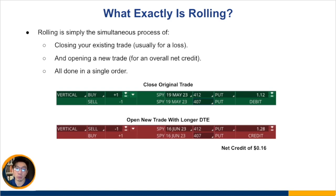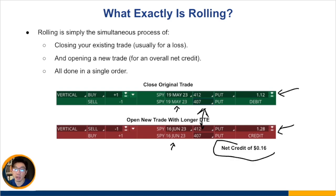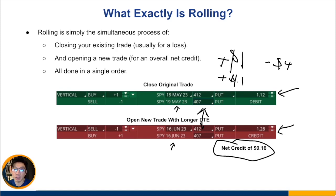Then you want to open a new trade with a longer days to expiration. You close out the one expiring in May and open the one expiring in 16 June, keeping the same strikes. The credit you receive for selling this longer-duration bull put spread is higher than the debit you paid to close the original trade, giving you a net credit of $0.16. So your new risk profile is: max profit $1.16, and max loss is $4 minus $0.16, which is $3.84. You've skewed the risk and reward even more in your favor.